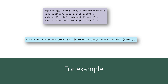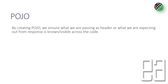For a simple project this is fine, but once things get complex, it is highly important to create POJOs — Plain Old Java Objects — to ensure what we are passing in is known and visible across the code, whether it's a header or what we expect from a response.